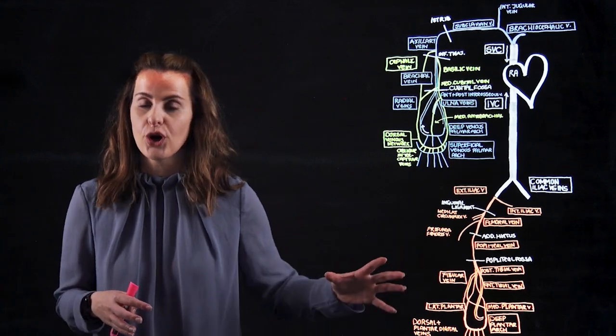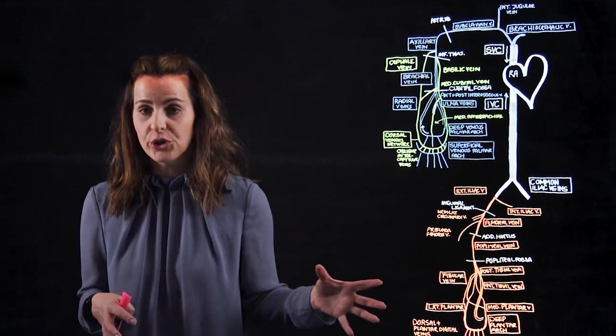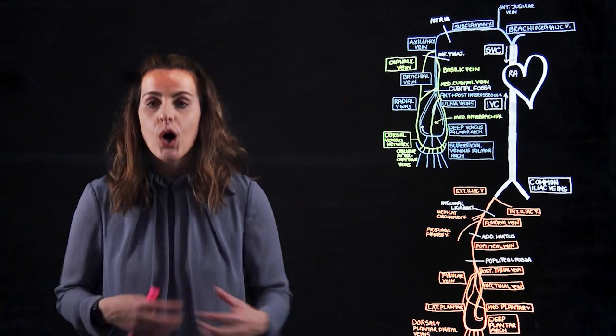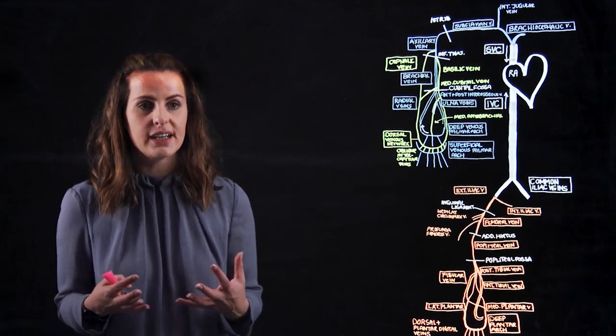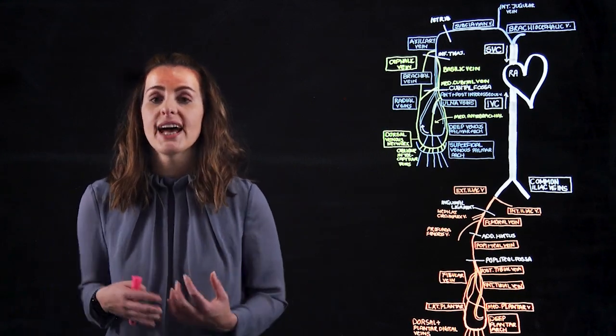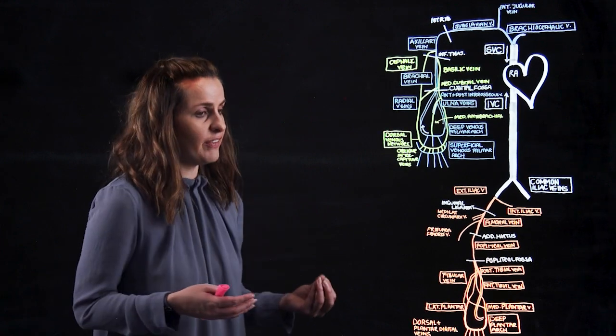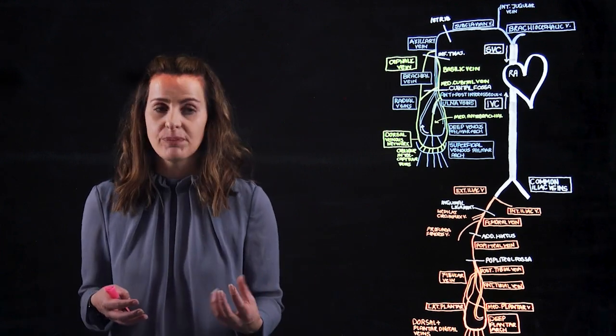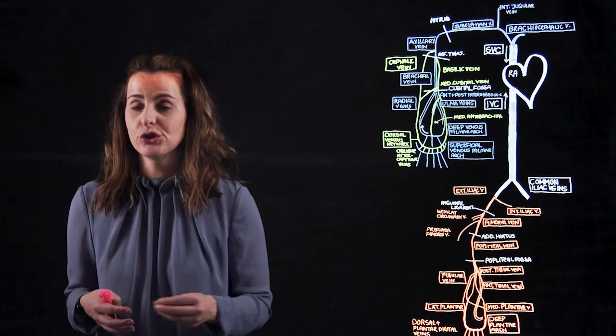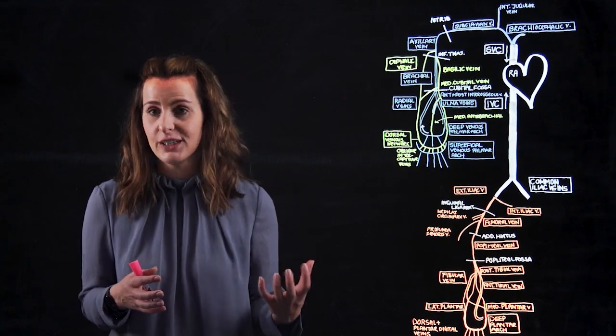You can see that I've drawn on the deep veins of the lower extremity in orange. What I'd like us to also consider is a condition known as deep vein thrombosis, and deep vein thrombosis or DVT is most commonly going to originate in the popliteal vein.